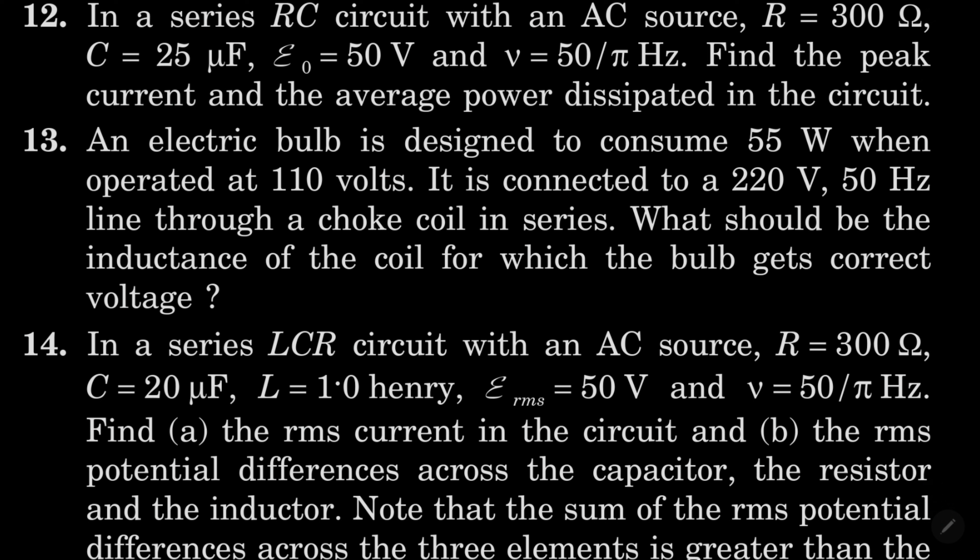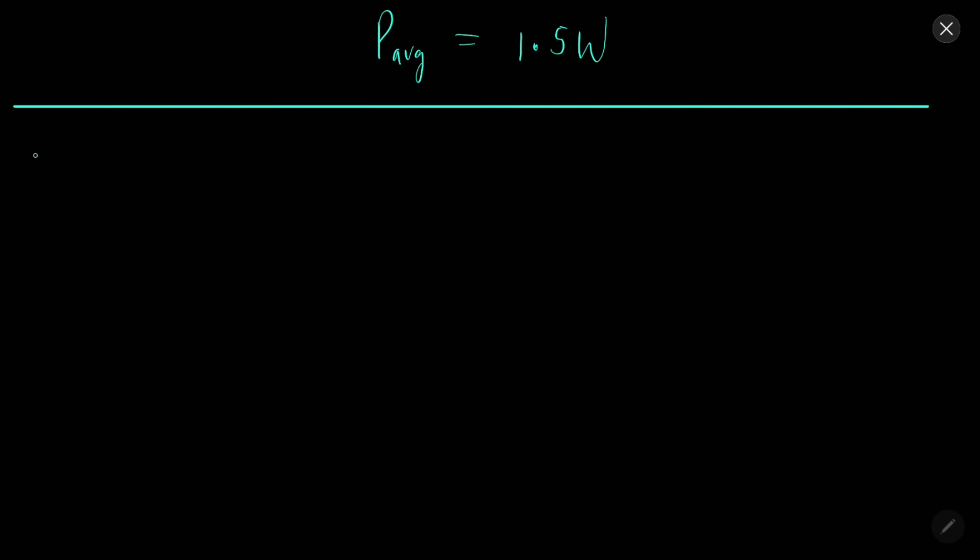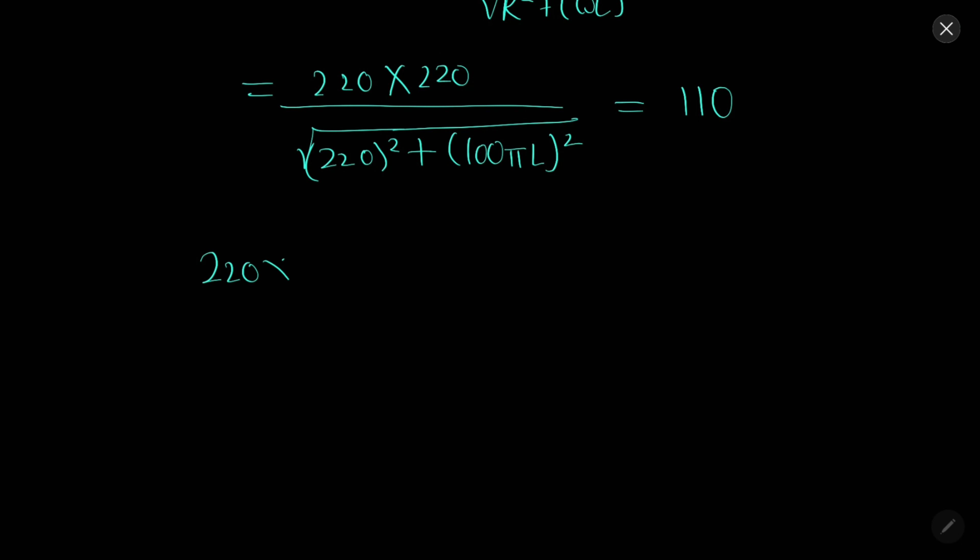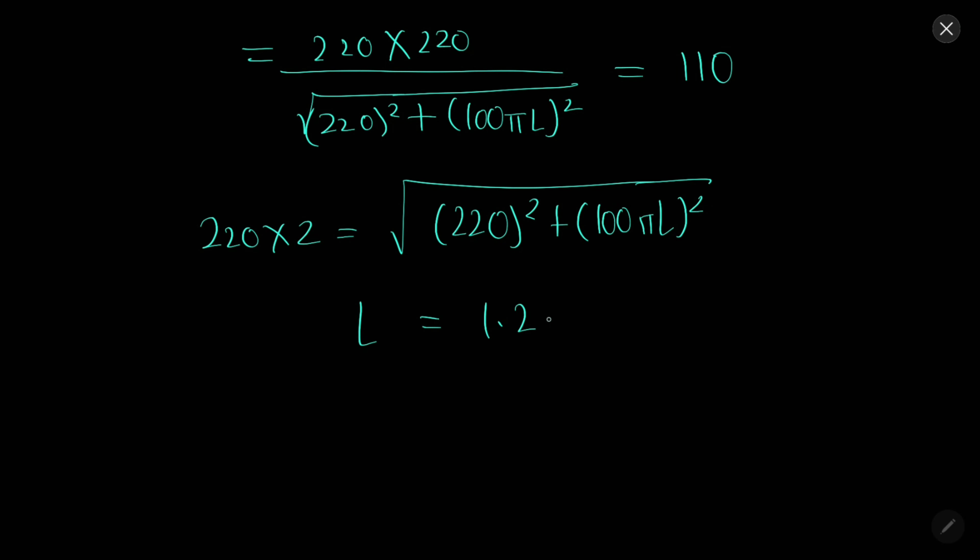In question 13, what should be the inductance of coil for which the bulb gets correct voltage? Solution 13: voltage drop across the resistor will be I times r, which will be 220 into 220 over root of 220 square plus 100 pi L whole square, giving us 110. Now 220 into 2 equal to root 220 square plus 100 pi L whole square. From here L will come out to be 1.2135.